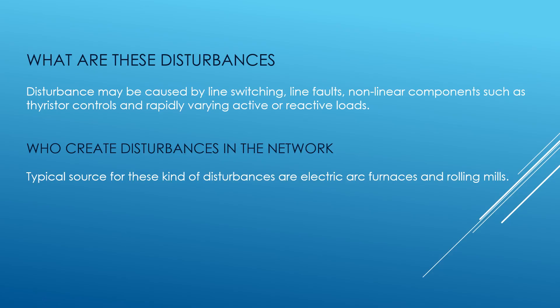Now let's look at these disturbances and who creates them. A disturbance is a power system imbalance caused by changes in reactive power requirement due to various reasons — this could be line switching, line fault, network short circuits, line and generator disconnection. Typical sources for these kinds of disturbances are electric arc furnaces and rolling mills. These disturbances result in harmonics that load the supply network and cause voltage fluctuations.